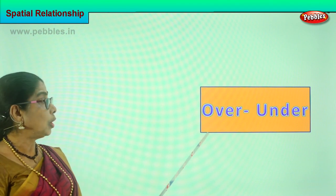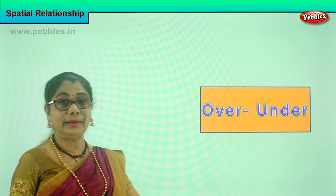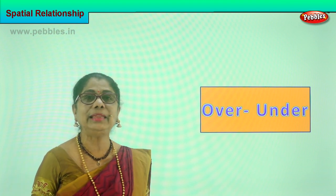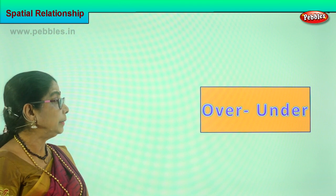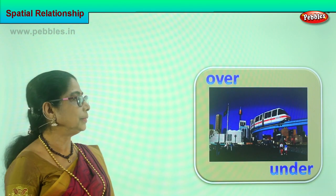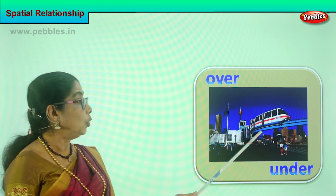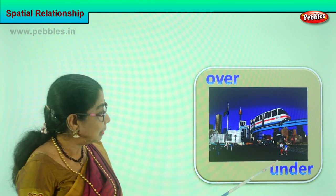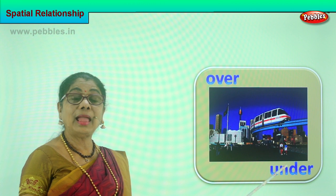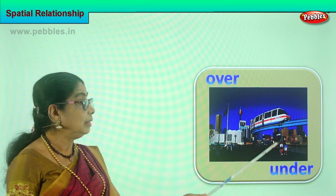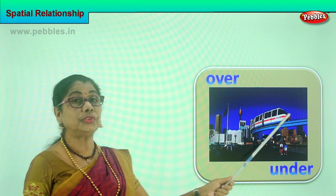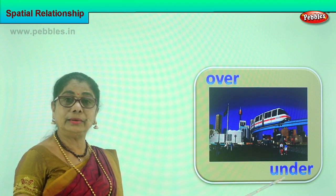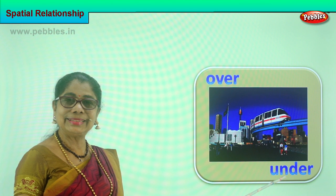Let's look at the next. Next, we are going to talk about over and under — the relationship between over and under. Look at the picture carefully and learn for yourself. Over, under. Now, over — what is going over the bridge? A train. And what is under? There is a road under, and there are vehicles going under the bridge. Over the bridge goes the train; under the bridge go the vehicles. Over, under, yes? Good.